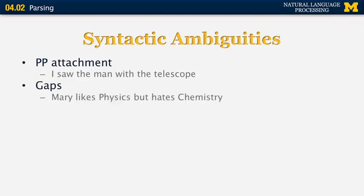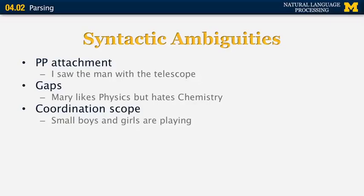We can also have gaps. In the sentence 'Mary likes physics but hates chemistry,' it is clear that the subject of the second verb 'hates' is also Mary, but this is not explicit from the structure. A successful parser should infer that Mary is the subject of both verbs. Coordination scope is another ambiguity: 'small boys and girls are playing' has two interpretations — either the boys are small and the girls are of any age, or both boys and girls are small. This is a coordination ambiguity because 'and' is a coordinating conjunction.